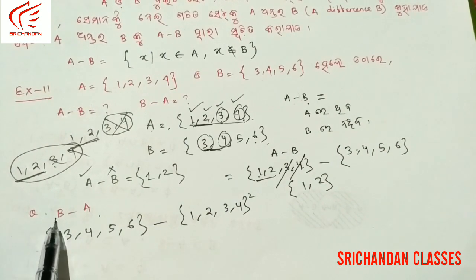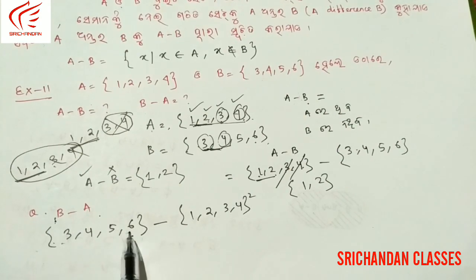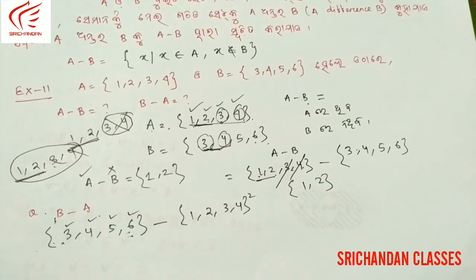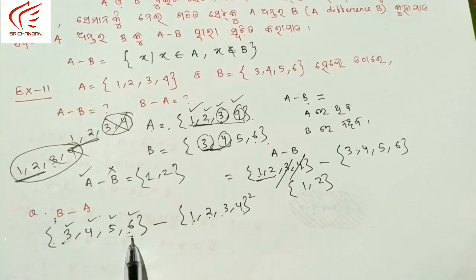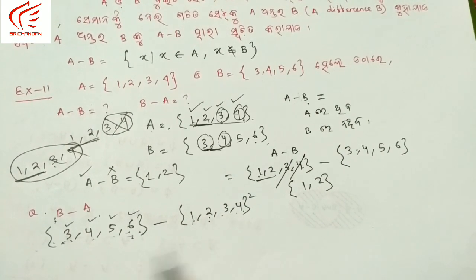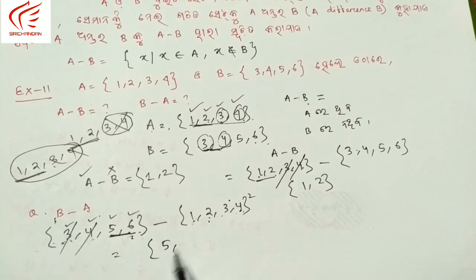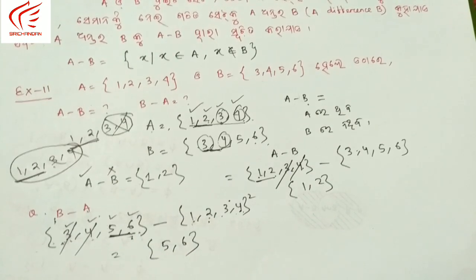B set result — elements in B set that are not in A set. B set is correct. The remaining elements after cancellation: from B set {3, 4, 5, 6} minus A set {1, 2, 3, 4}, the remaining elements are 5 and 6.